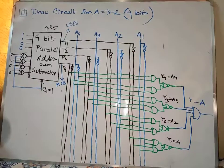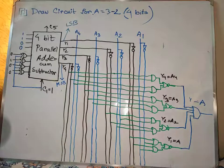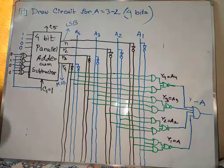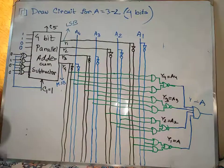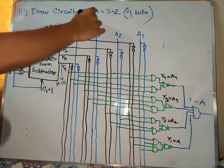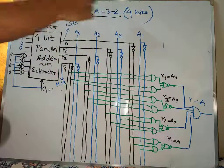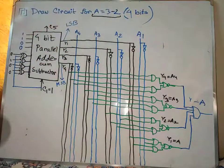Hello. In this tutorial, we are going to solve different problems. We have a question that is: draw a circuit for A equal to 3 minus 2.